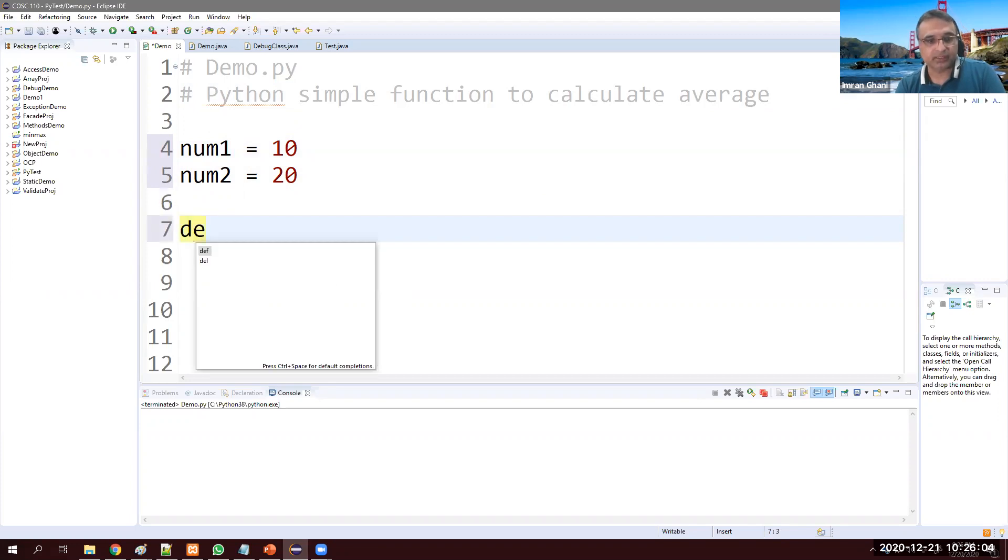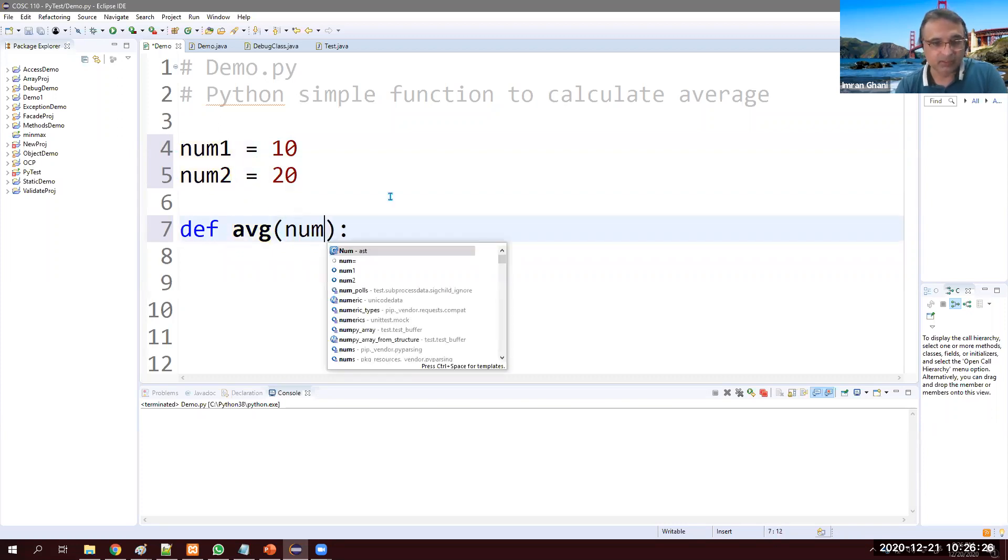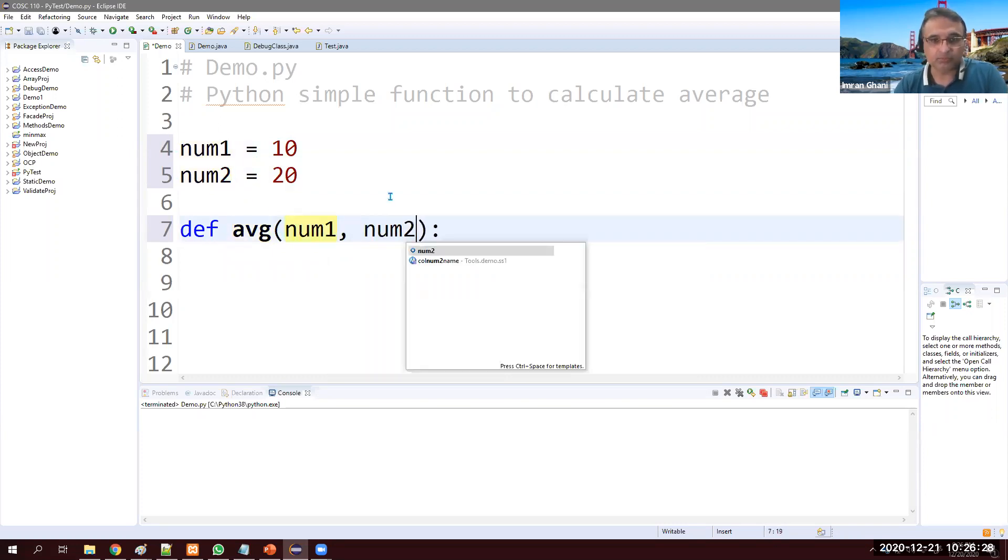So let's write a function. def is the keyword to define a function. Let's call it avg which is average, and then parentheses and colon. In this method definition we will get num1 and num2 as parameters. So let's get them right away: num1 and num2.